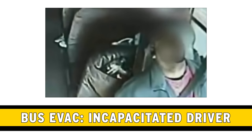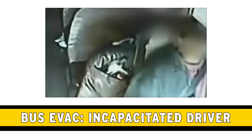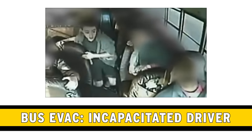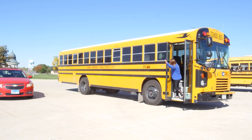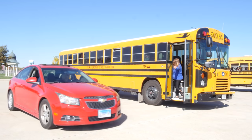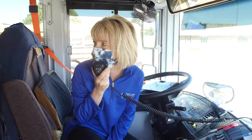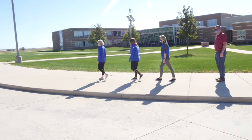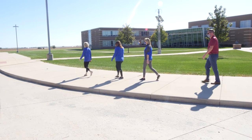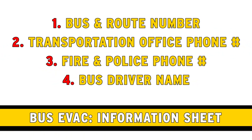If a bus driver is incapacitated, students must know how and where to obtain assistance in emergencies. This may be done by flagging down a passing motorist to call for help, using the two-way radio, cell phone, or sending an authorized student to a nearby house or office to make a call. Every bus should have an information sheet in a set location with the following information: bus route and bus number, telephone number for the transportation office, telephone numbers for fire, police, and ambulance, and the bus driver's name.